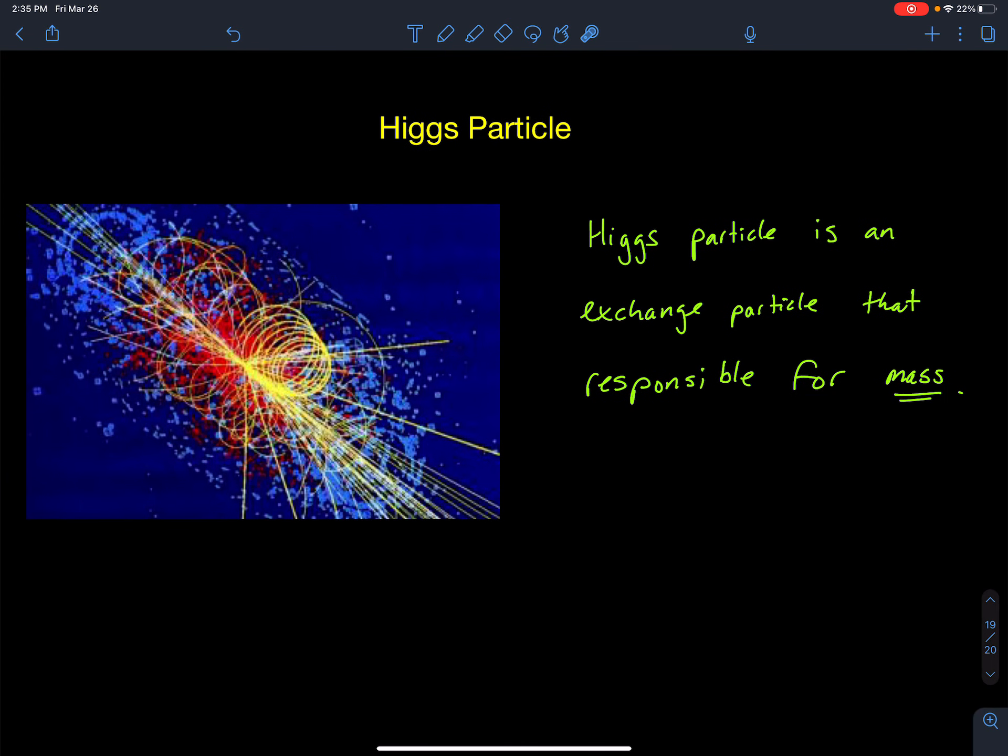The last particle, exchange particle, that got a lot of excitement is the Higgs particle. And here you can see a result of an explosion where we bring two nuclei together, we smash them together with high energy, and that energy is making a sea of particles.